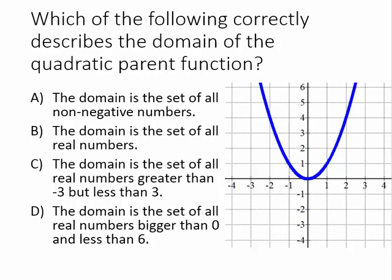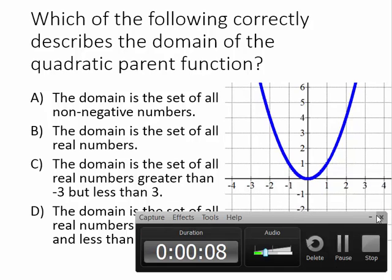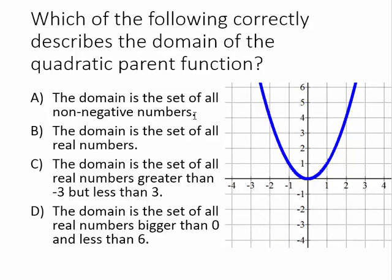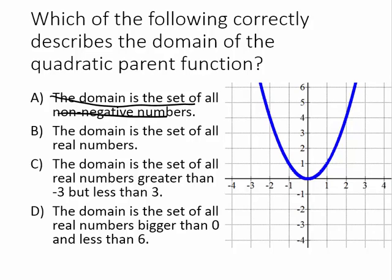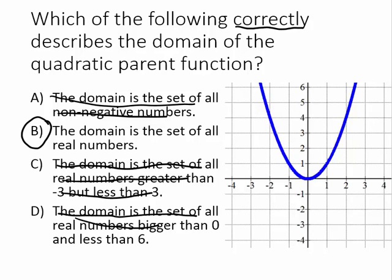Go ahead and work this problem out on your own, pressing pause, and press play when you're ready to see the answer. Answer choice A states that the domain is the set of all non-negative numbers. That's almost true but not completely, because the domain does include negative numbers — the graph goes forever to the left. B says the domain is the set of all real numbers, and that's true because it goes forever to the left and forever to the right. C restricts the domain between negative three and three, and D restricts it from zero to six — neither is correct. B is the correct answer choice for the domain of the quadratic parent function.